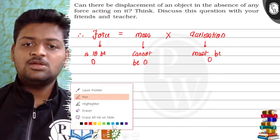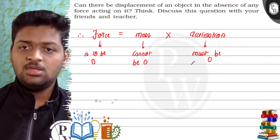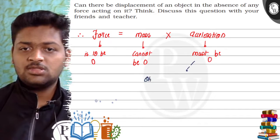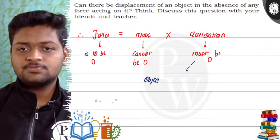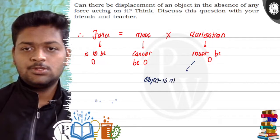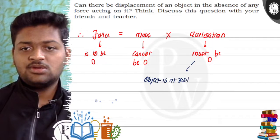Now we will discuss when acceleration can be 0. First, when object is at rest.